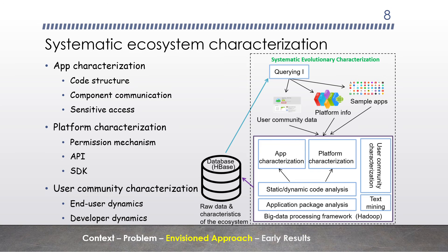With the data collected, we perform systematic ecosystem characterization. This characterization is systematic because it addresses the characteristics of each of the three ecosystem elements individually, but also the interactions — for example through correlation analysis among those elements. The app characterization part captures app behaviors in several dimensions, including the composition and functionality distribution of an app and its executions, and the intercomponent communication within single apps and across multiple apps, as well as sensitive data access including the production, consumption, and potential leakage of sensitive data in an app.